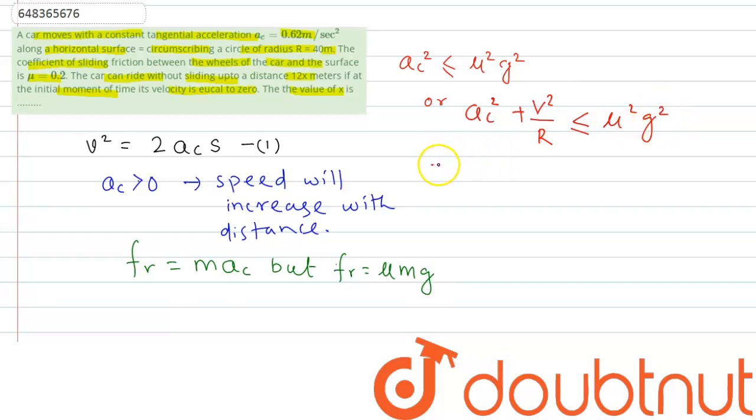Again we can write v squared is less than equal to mu squared G squared minus AC squared into this radius R.